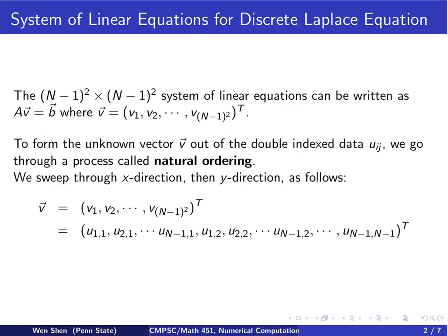You fix j to be 1, and let i go through 1, 2, all the way to N-1. Once you sweep through the x direction and you're done, then you let j be 2, and you let i go through 1 to N-1. And then you keep increasing j until you finish the last j when it's equal to N-1.